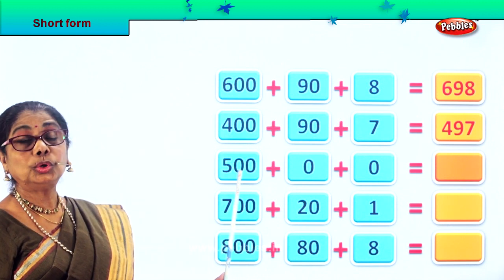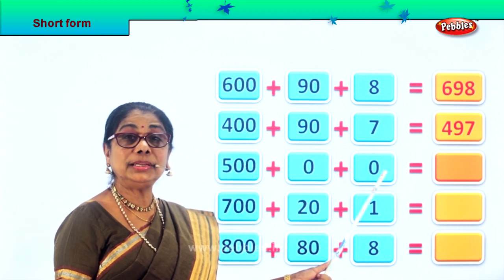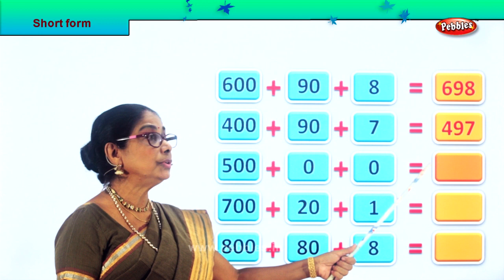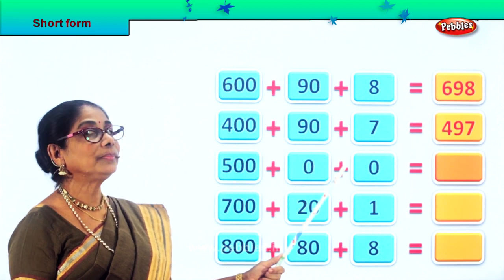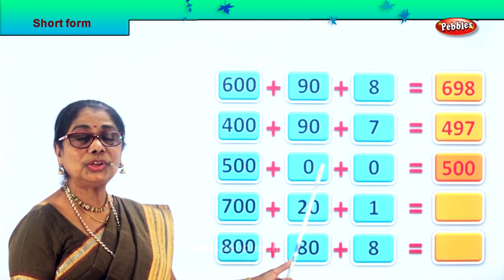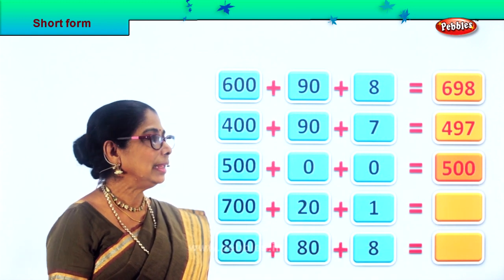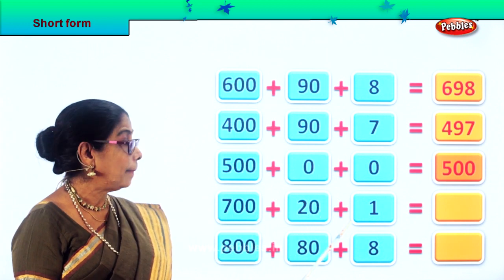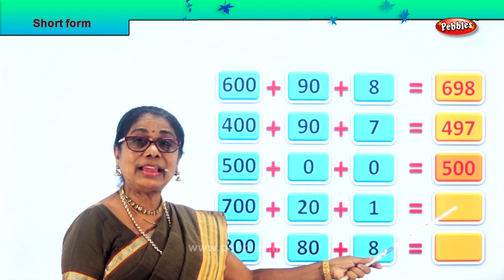Next, do the short form for 500 plus 0 plus 0. 500 plus 0 plus 0 equal to 500, because there is 0 in the tens place and 0 in the ones place. So the answer is 500. Let's do the short form for 700 plus 20 plus 1. 700 plus 20 plus 1 is equal to 721.